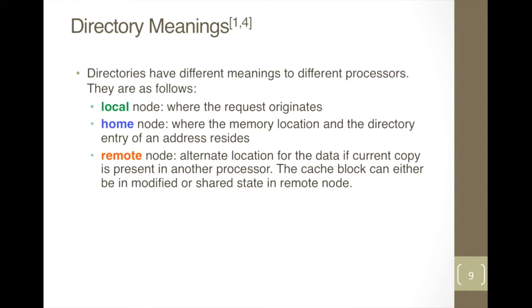Nodes have different meanings according to the originated request. First, local node is the node where the request originates. Second, home node is where the memory location and the directory entry of the requested address is present. Third, remote node is the alternate location of data if the current copy is present in another processor cache — the block can be in modified or shared state.